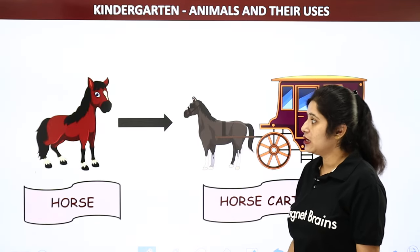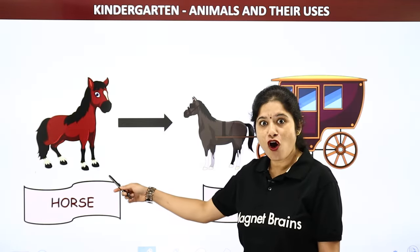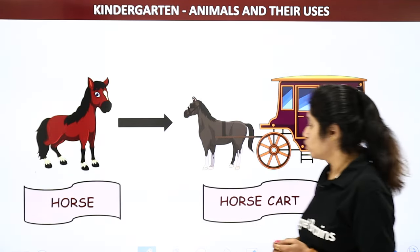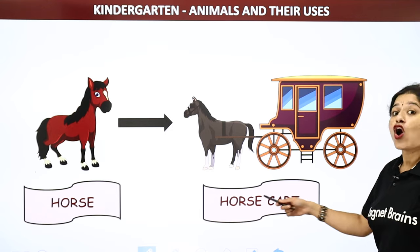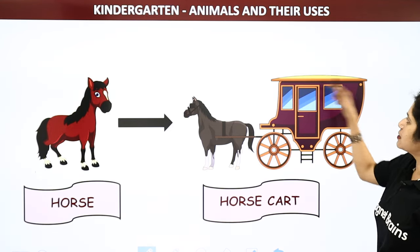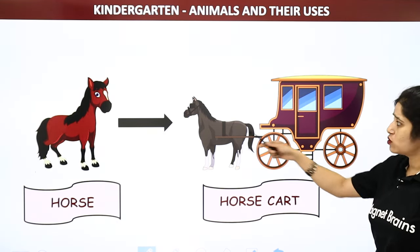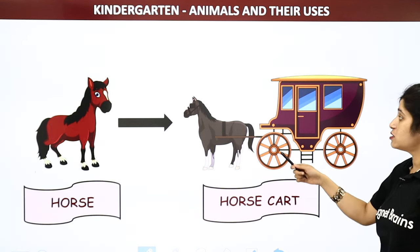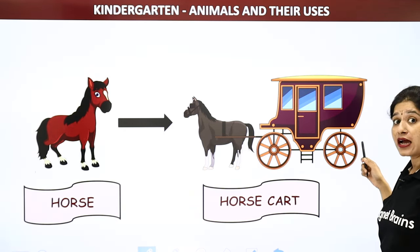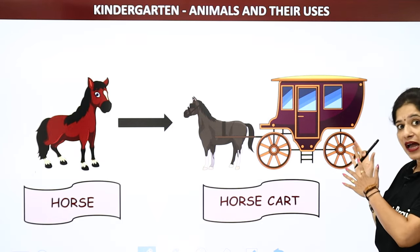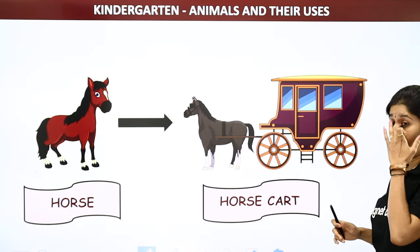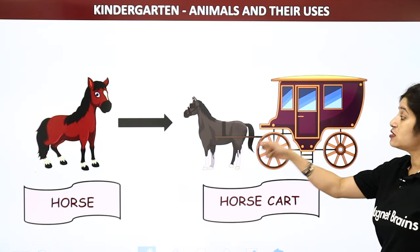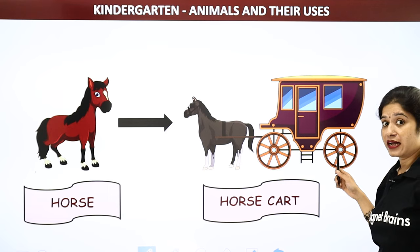The next animal is horse. How do we use horse? We use horse as a horse cart. Can you see this cart which is attached to this horse? So horse is used as a horse cart — we can sit inside this cart and move from one place to another.